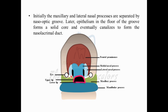The nasolacrimal duct connects from the nose towards the eye — 'lacrimal' refers to the lacrimal gland associated with the eyes, which helps in tear production. Those tears come from the nasolacrimal duct towards the nose. That is why when you have tears in your eyes, water also comes inside the nose and you start to sneeze — because the nasolacrimal duct connects the eyes to the nose. The naso-optic groove thus plays a vital role in forming this structure.